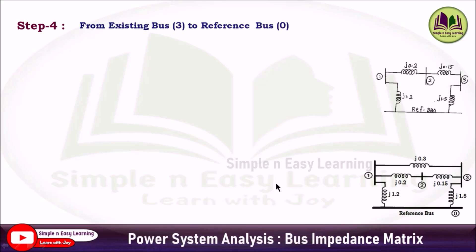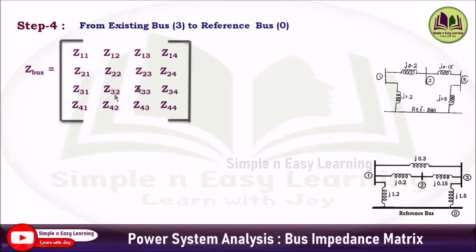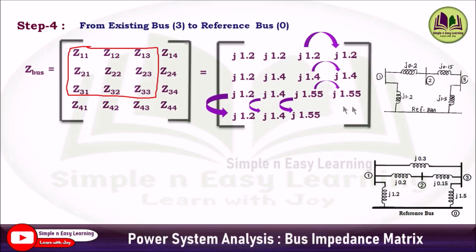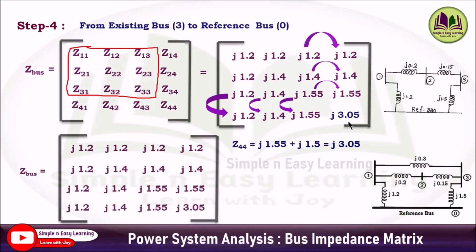Step 4: from existing bus 3 to the reference bus, considering reactance j1.5. Z-bus is now a 4×4 matrix with 16 terms. The nine terms from step 3 are substituted directly. Using the copy-paste procedure, Z14 = j1.2, Z24 = j1.4, Z34 = j1.55, and similarly for the fourth row. Z44 equals j1.55 plus j1.5, giving j3.05. The Z-bus matrix at step 4 is thus a 4×4 matrix.